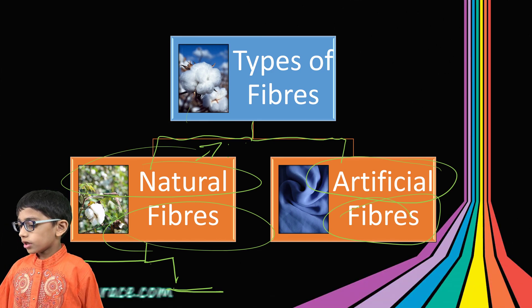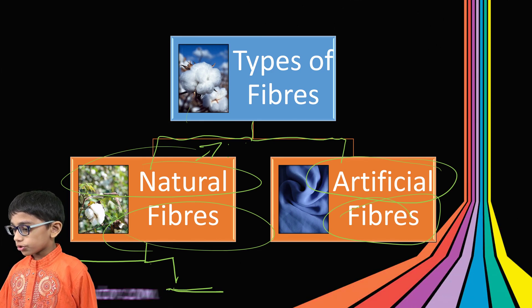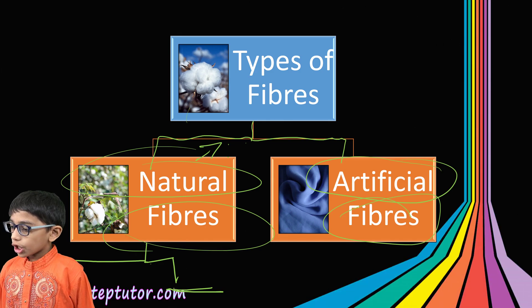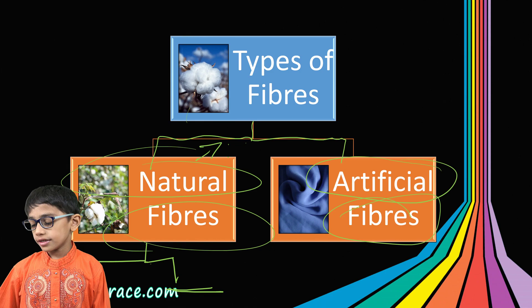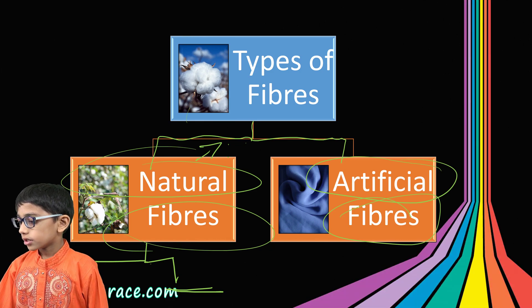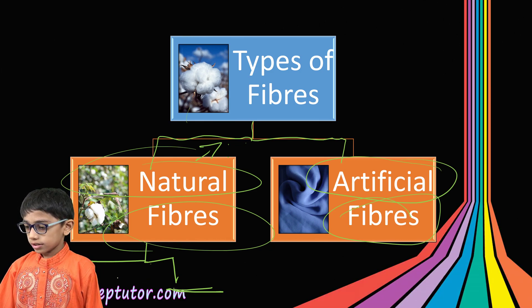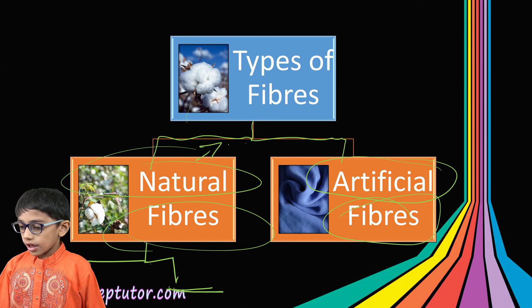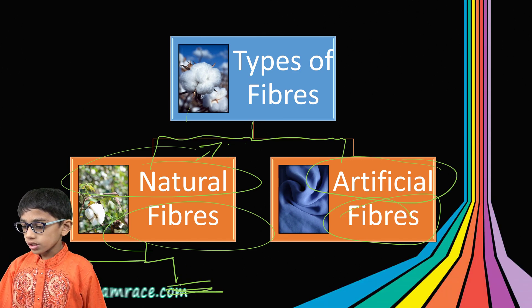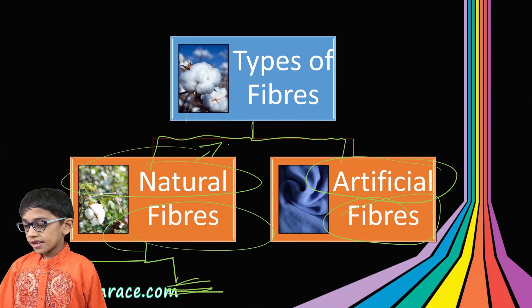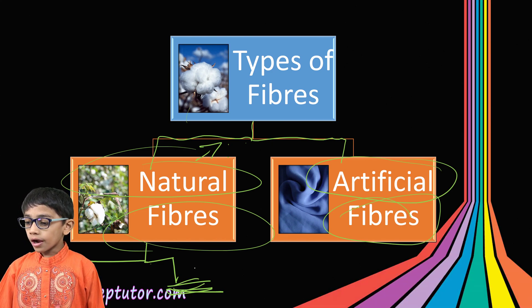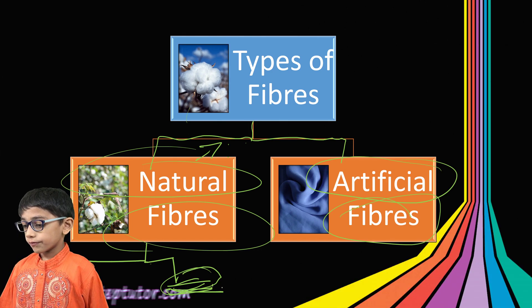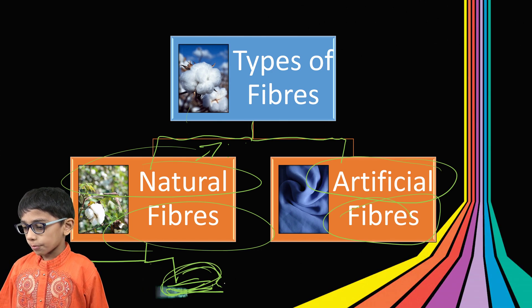Jute is obtained from the jute plant. Cotton is obtained from the cotton plant. Coir is obtained from the coconut. In animal fibers, there is wool, silk, and others. Wool is obtained from sheep.